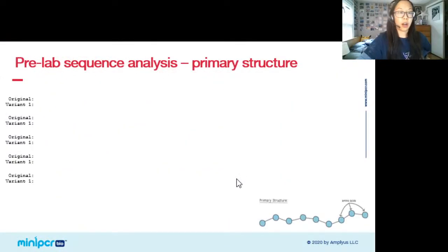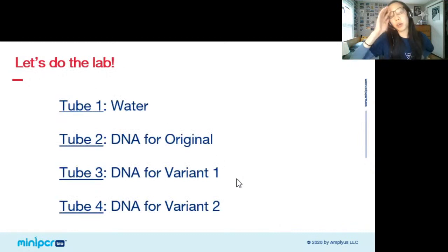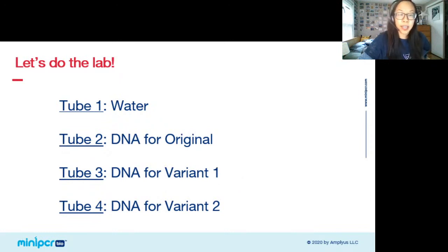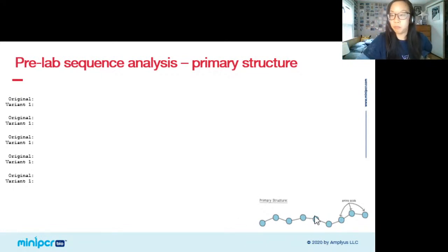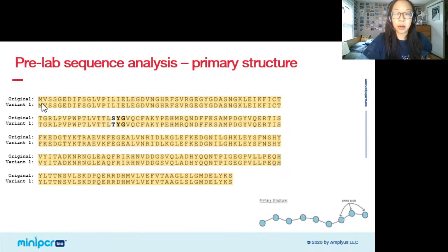As you just saw, the lab was pretty straightforward — I just pipetted the DNA into those tubes. To understand the results we're going to get though, we need to take a look at the sequences and structures of the proteins we're about to make. For our analysis let's start at the primary structure level, which is just the order of the amino acids that make up the protein sequence. Instead of representing the protein sequence as just blue circles, I'm representing each amino acid by their single-letter abbreviation — M for methionine, V for valine, etc.